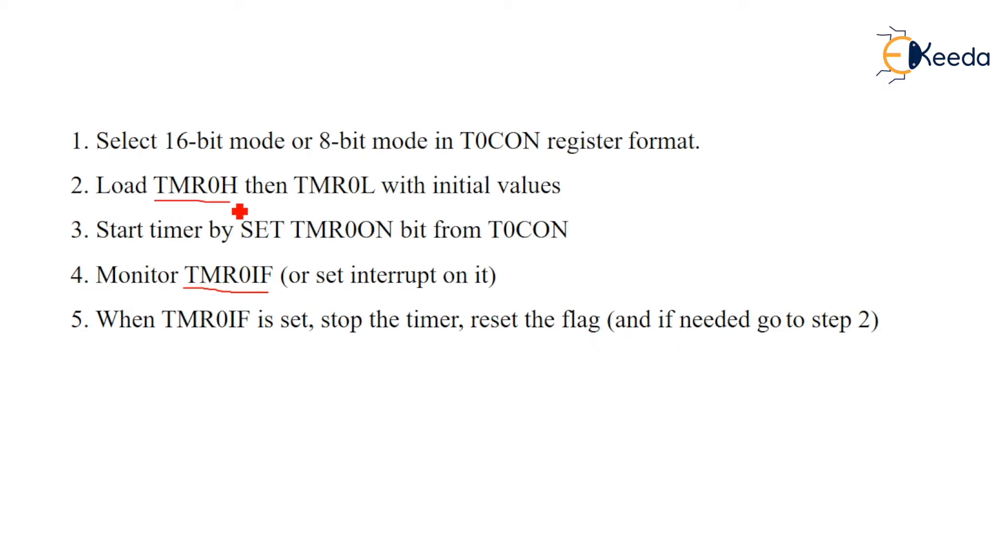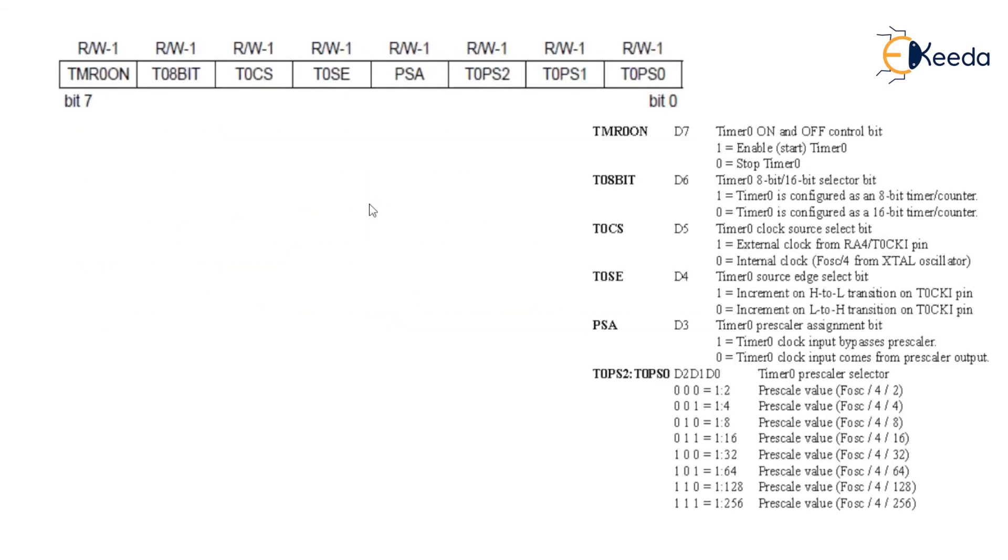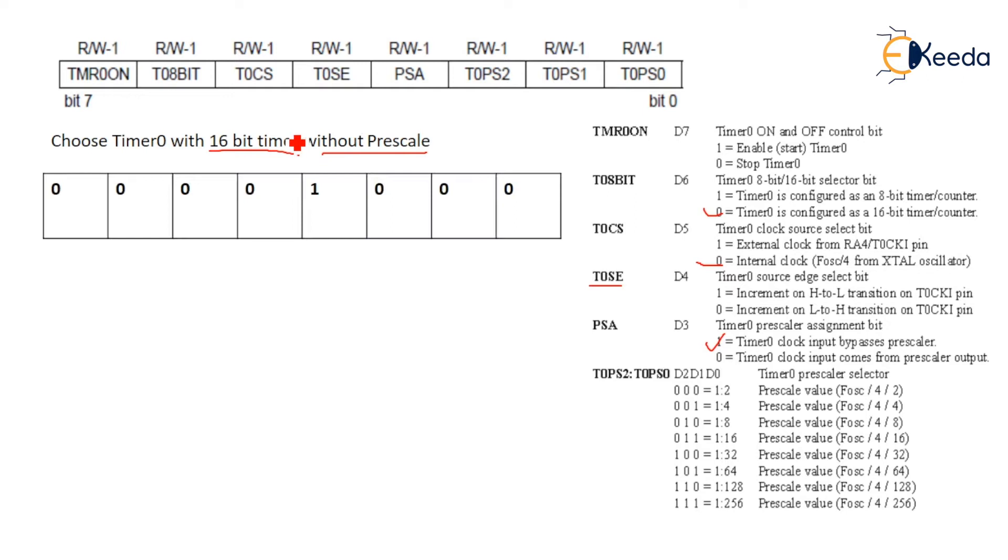Now here's the T0CON register combination. If I choose Timer0 with 16-bit timer without prescaler, what are the bits we have to consider? First condition: it is 16-bit timer, so T08BIT will be 0. Without prescaler means you are bypassing the prescaler, so use this one bit. We are using internal clock for timer delay, so this bit is also 0. We are not using external clock so this bit is don't care or put 0.